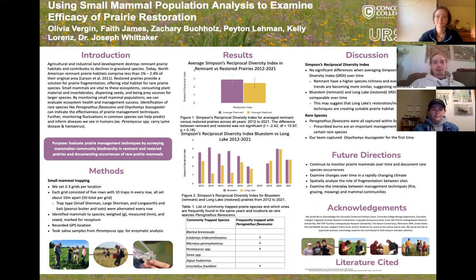Agriculture and industrial land development destroys remnant prairie habitats and contributes to declines in grassland species. Today, North America's remnant prairie habitat comprises less than one to two and a half percent of its original area. Restored prairies provide a solution for prairie fragmentation, offering vital habitat for rare prairie species.